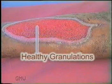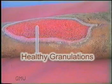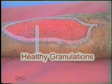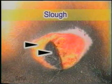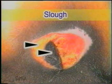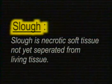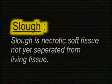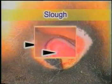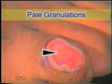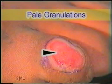A healthy ulcer shows healthy granulation tissue, no slough, and a small amount of serous discharge. A spreading or infected ulcer shows areas of unhealthy granulation tissue and areas of slough. Slough is necrotic soft tissue which has not yet separated from the living tissue. A chronic non-healing ulcer shows pale, flat granulation tissue which does not bleed easily on touch.